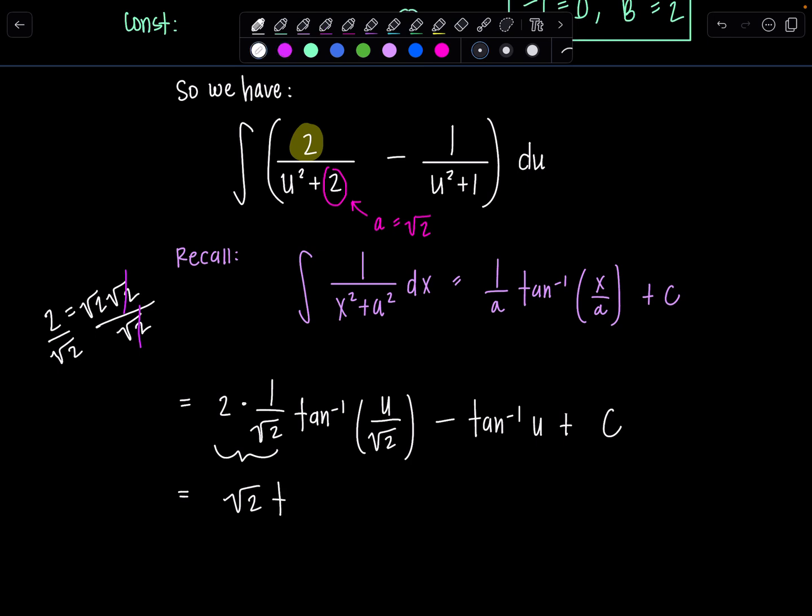And then I have tan inverse of u was tangent of x over radical two, and then I have minus tan inverse of tangent of x plus c.